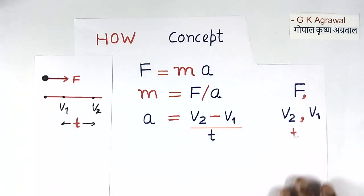So if we know V2, V1, and T, then we can calculate the acceleration using this formula. And if we know force also, then we can calculate the mass using this formula. So we should know force, V2, V1, and T to calculate the mass of any object.